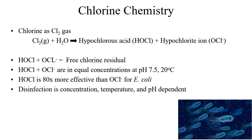As the pH goes below 7.5, hypochlorous acid becomes the dominant compound. Hypochlorous acid is the workhorse of the two compounds and is 80 times more effective than the hypochlorite ion for disinfecting E. coli, a common bacteria. Disinfection is influenced by the concentration of the disinfectant, the temperature of the water, and the pH of the water.